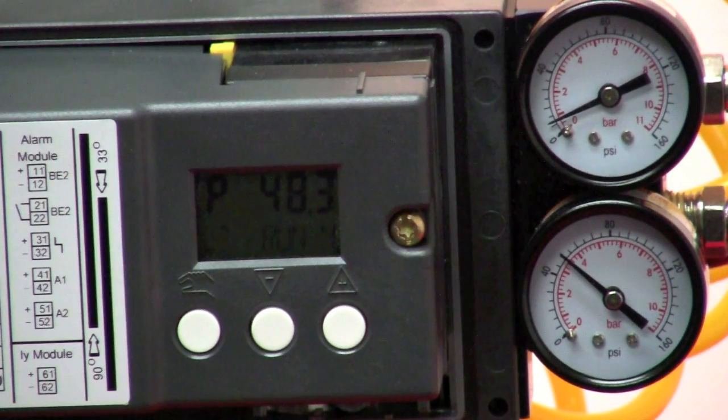Run 1 establishes the direction of operation. Run 2 establishes the end points of the stroke, where is the valve fully open and where is it fully closed.